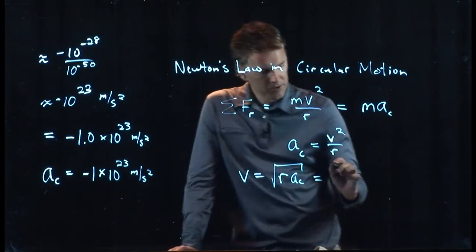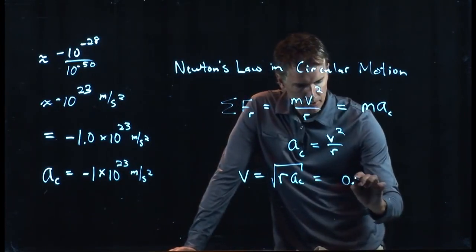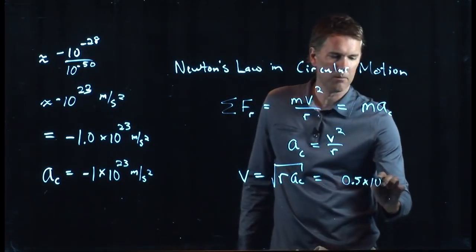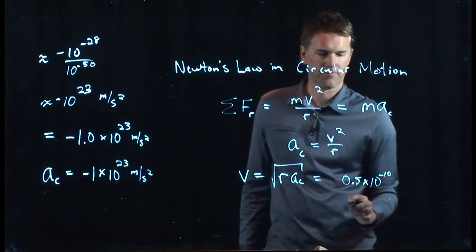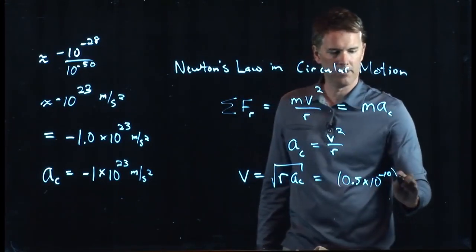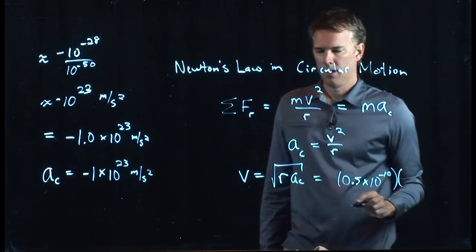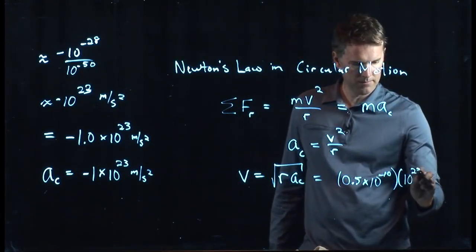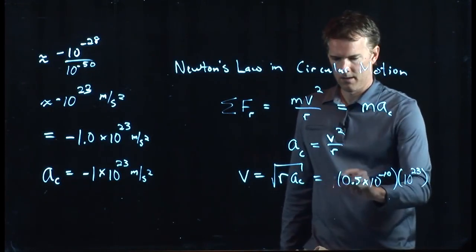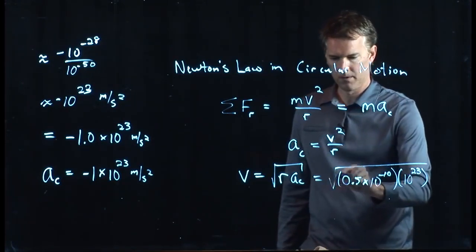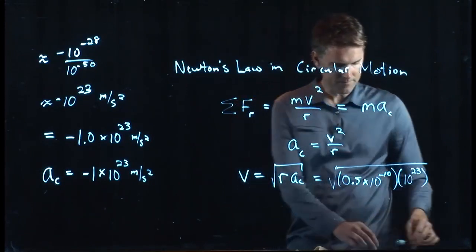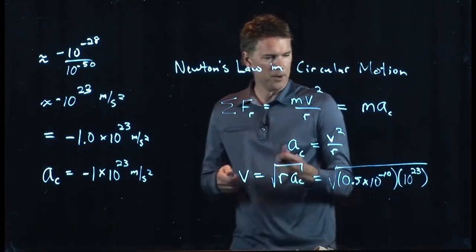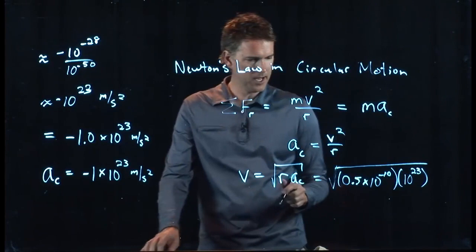And we know r. We said r was a half an angstrom. 0.5 times 10 to the minus 10. Put some parentheses around that. ac, we just found, it's 10 to the 23. SI units will take the square root, and that should do it. And if you punch that into your calculator, tell me what you get.